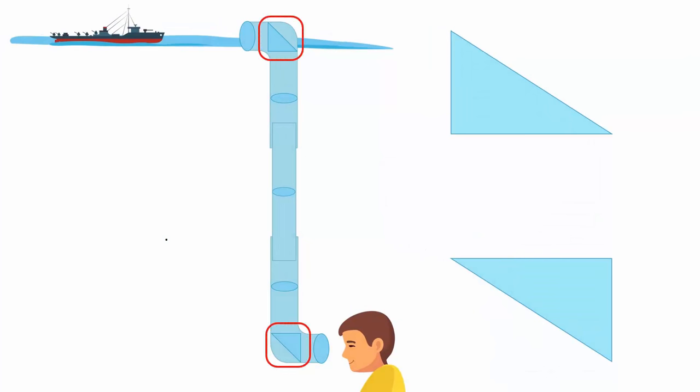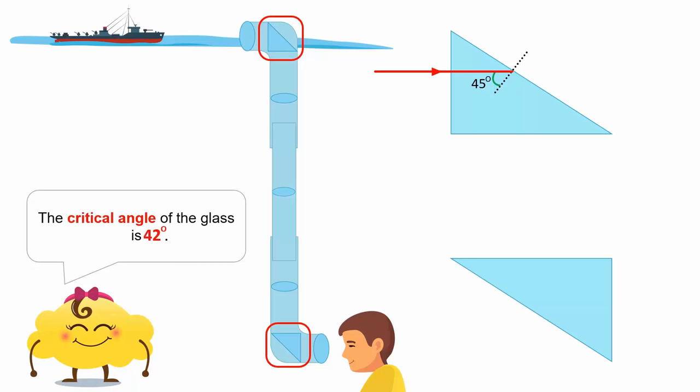It consists of two prisms that are fitted into each end of the tube. In the periscope, light hits the top prism at an angle of 45 degrees. This is greater than the critical angle of the prism, hence total internal reflection occurs.